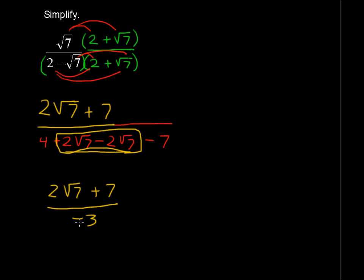I don't like writing the negative sign in the denominator, so I'm just going to move it right in the middle. Either in the middle or in the top. I'm going to put it right in the middle. So, 2 square roots of 7 plus 7 all over 3, and that will be our final answer.